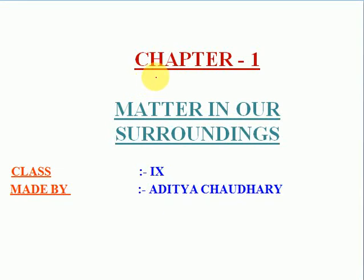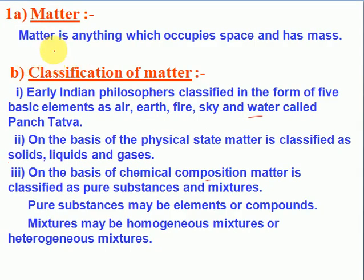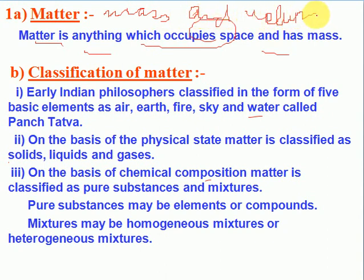Today we are going to start a new chapter of Class 9 — Chapter 1: Matter in Our Surroundings. First, we will learn what matter is. Matter is anything which occupies space and has mass, or we can say matter is anything that has mass and volume. Examples of matter include book, air, or milk — anything around us is matter.